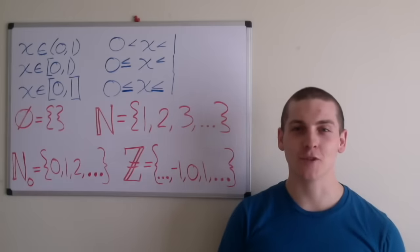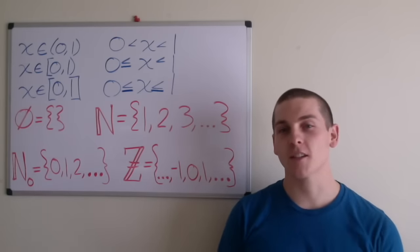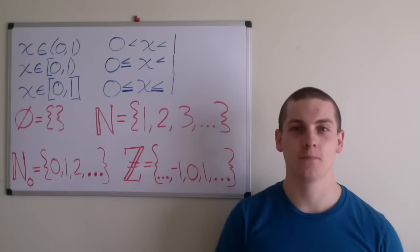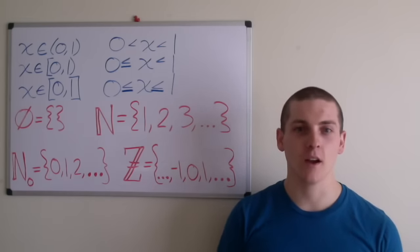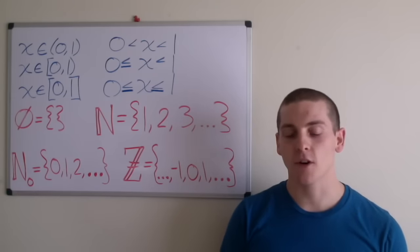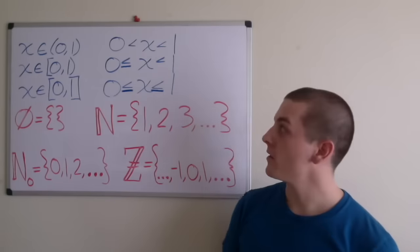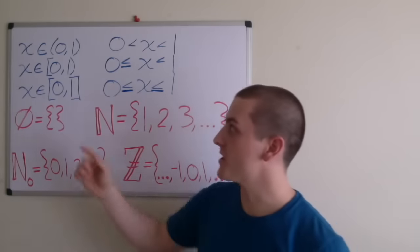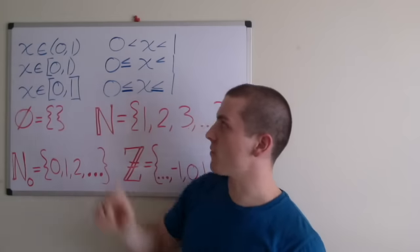In this video, I'll be introducing interval notation and talking about some common sets. This will lay the foundation for the next video on set builder notation. The beauty of interval notation is that it allows us to efficiently describe all numbers between two values. Suppose we wanted to say that the variable x is between 0 and 1. We could say that x is an element of the interval 0 to 1, which is really saying x is greater than 0 and x is less than 1.